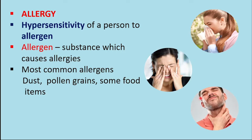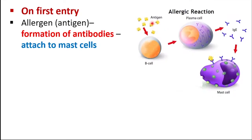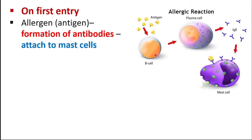How does our body respond to allergens? When the allergens enter into our body for the first time, these allergens are recognized by the B cells or B lymphocytes. In response to the entry of these allergens, our B cells produce antibodies. These Y-shaped molecules are the antibodies. Here, allergens act as antigens, and in response to the entry of antigens, our B lymphocytes produce antibodies. These antibodies are then attached to the mast cells.